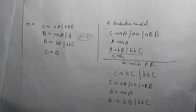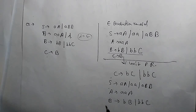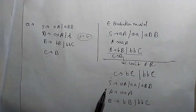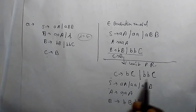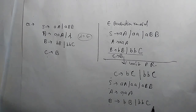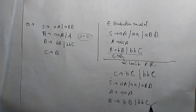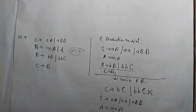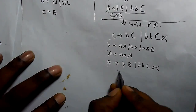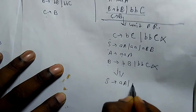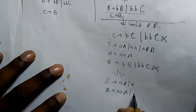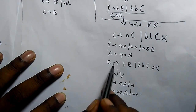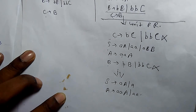Now we have to find useless symbols — those that cannot be accessed by S or that do not generate any terminal. Capital C and capital B are variables; small a and small b are terminals. Here we can see capital C does not derive any terminal, and capital B does not derive any terminal on its own — it derives a terminal along with some variables. So these two are useless symbols. The final simplified grammar is: S derives AA, A, and A derives AA, A, and small a — all B variables are removed. This is simplification of context free grammar.